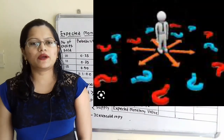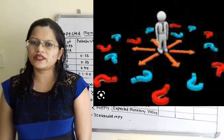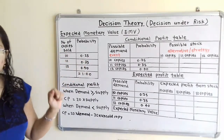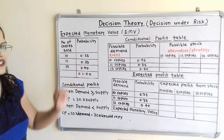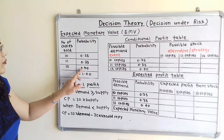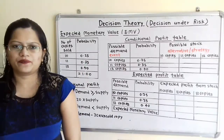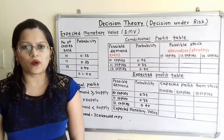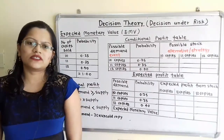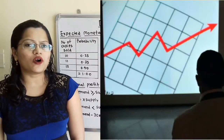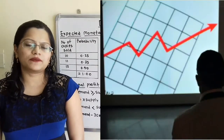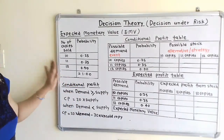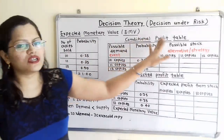In the given question, number of copies sold is mentioned with probability. Number of copies sold is given: for 10 copies, probability is 0.25; for 11 copies, probability is 0.35; and for 12 copies, probability is 0.40. We have to find out how many copies should be ordered by the newspaper boy for maximum possible profit. For that, we will first prepare the conditional profit table.